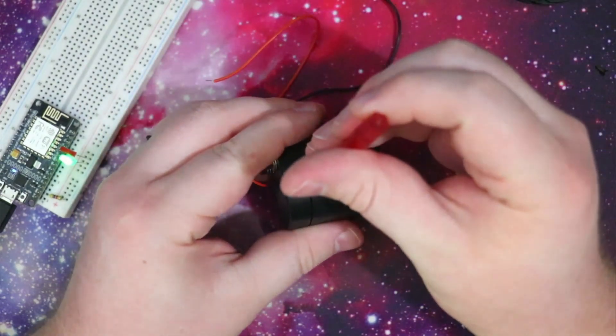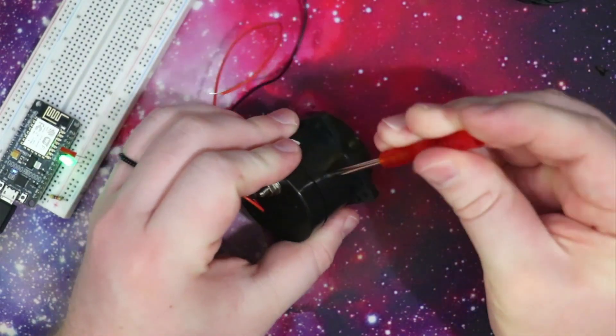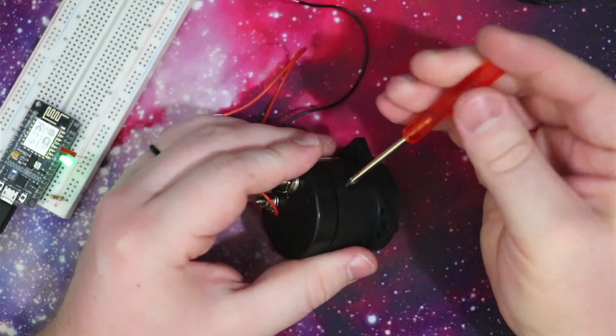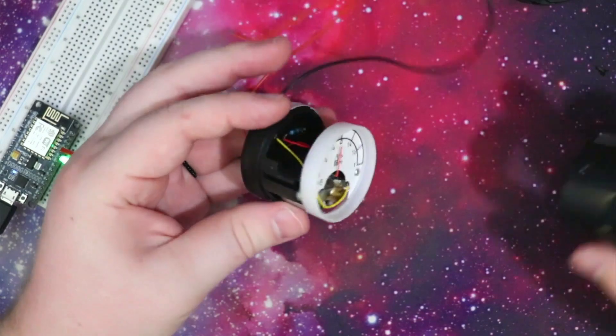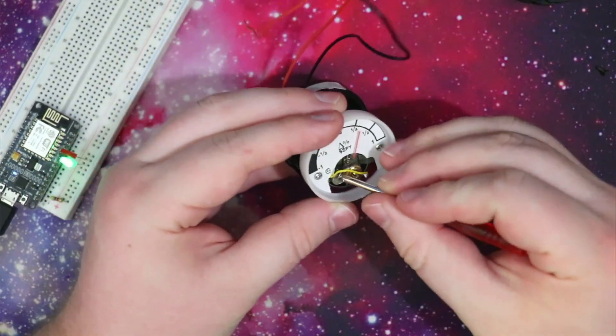But I instead opted to take apart the voltmeter again and reset the bias back to the far left. This would mean that when unpowered or unresponsive, the voltmeter would show negative maximum daily change, but I guess that's not a huge deal and this is just the prototype, so I can work more details out later.